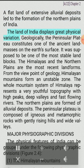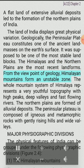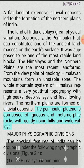The land of India displays great physical variation. Geologically, the peninsular plateau constitutes one of the ancient landmasses on the earth's surface and was supposed to be one of the most stable land blocks. The Himalayas and the northern plains are the most recent landforms. The Himalayan mountains form an unstable zone with high peaks, deep valleys and fast-flowing rivers — a very youthful topography. The northern plains are formed of alluvial deposits, while the peninsular plateau is composed of igneous and metamorphic rocks with gently rising hills and wide valleys.